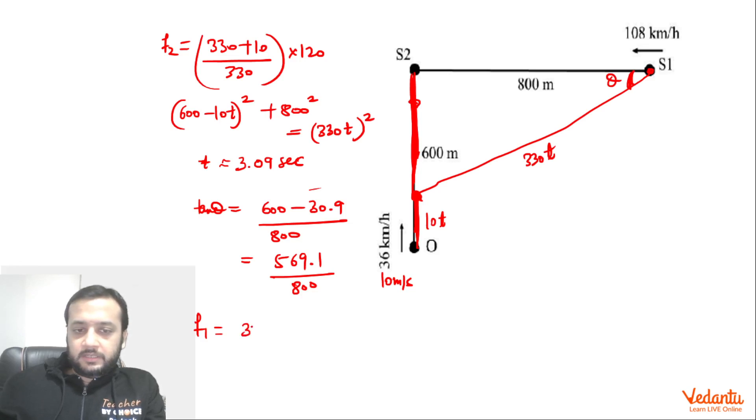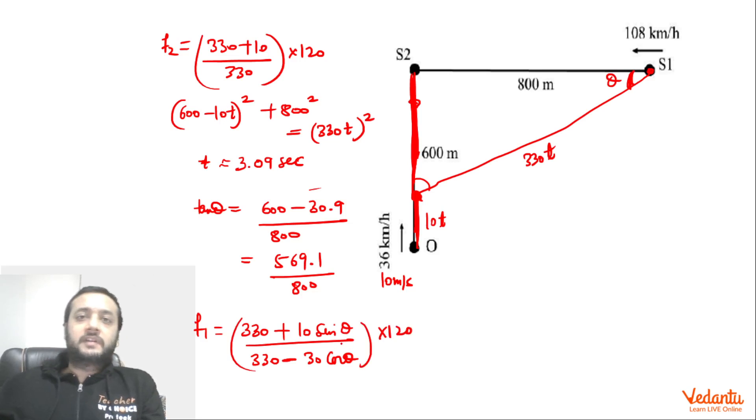So F1 I am writing in terms of theta itself. So this will be again 330 plus velocity of sound with respect to observer. So that will be equals to 10 sin theta divided by 330 minus velocity of source at this moment, which is 30 cos theta, into 120 of course. So this will give you the exact answer, which will not be much different from the IIT answer. It will be a nice practice for all of you to see what do you get and you will see that it will not be much different from 8.1.